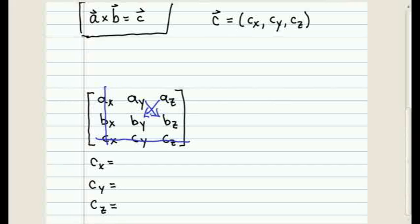So CX then becomes AY times BZ minus AZ times BY. And now you have the first component of your unknown vector CX.